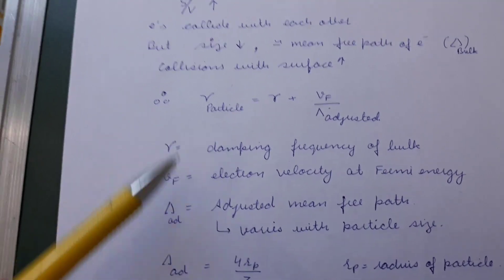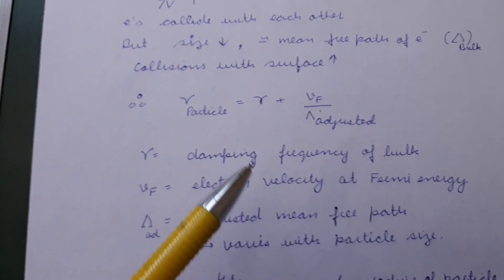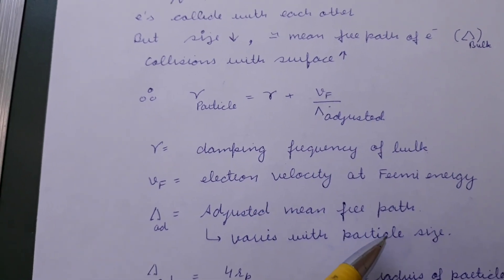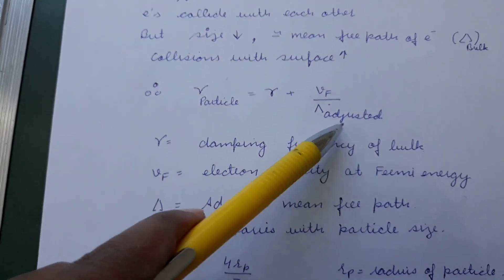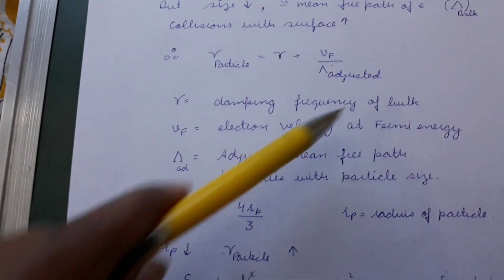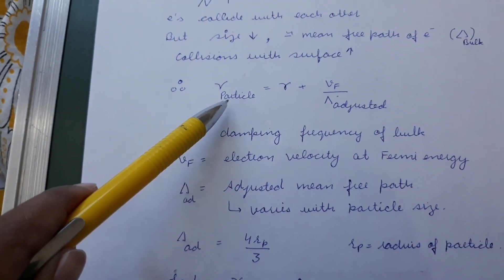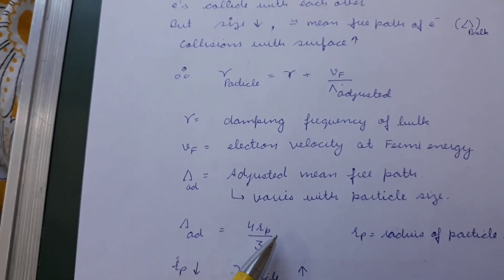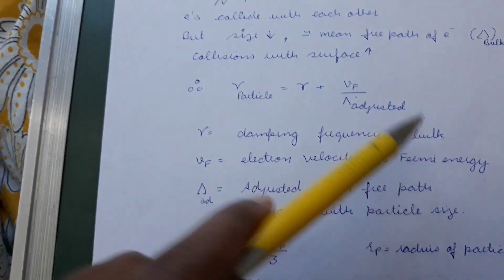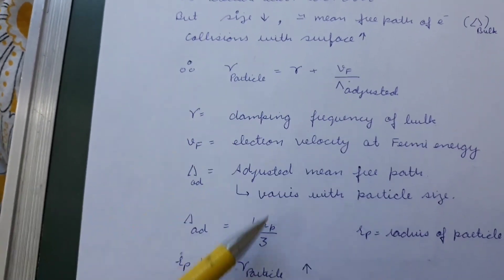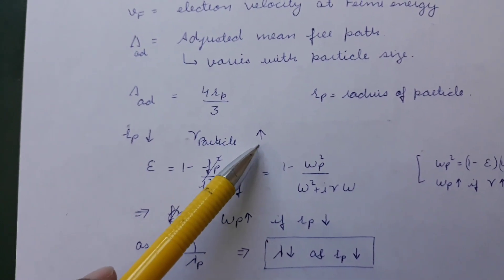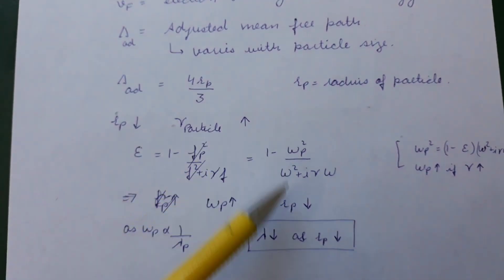The adjusted mean free path means that when the size of the material is small, the mean free path will vary with particle size. The damping frequency depends upon this adjustment term, which in turn depends on the mean free path. If the size of the particle is small, this adjustment term is large, leading to larger damping. So smaller particles have larger damping because of contributions from the surface.